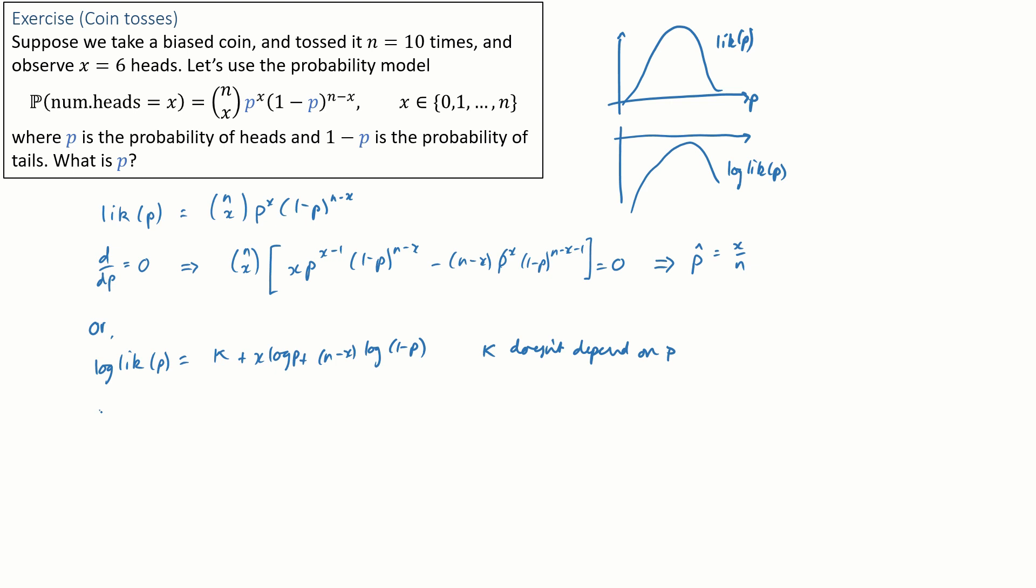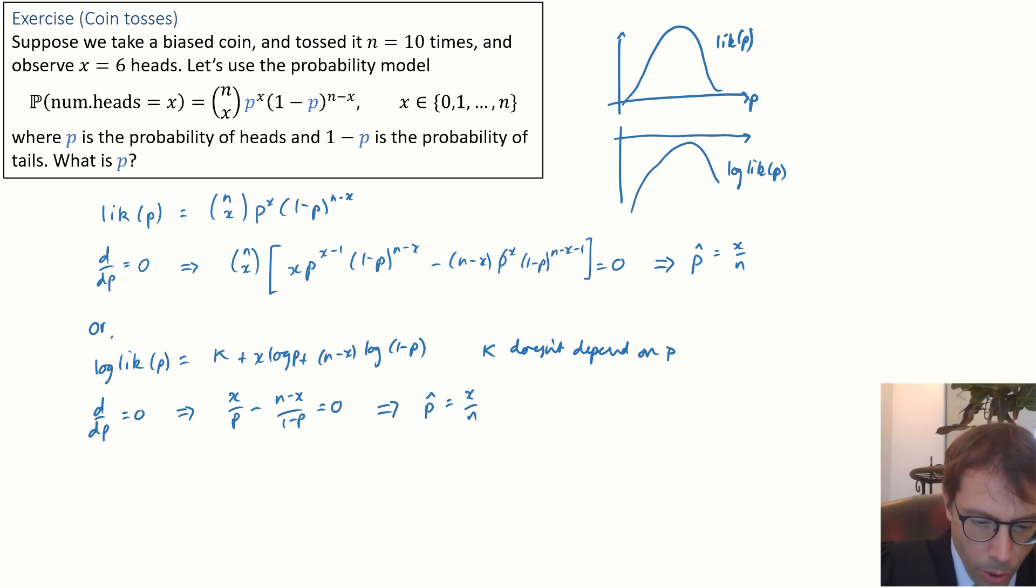Here's a sketch of the log likelihood. Obviously, it's just got to have the optimum at precisely the same value of p because log is an increasing function. So if we differentiate this, we get a slightly simpler looking expression. And from here, we get exactly the same answer. When I'm writing out things like this, I like to write the probability of seeing X heads semicolon p to remind myself that the answer involves both X and p. This is maximum likelihood estimation.